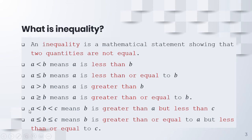For instance, in this continued inequality, we start by saying B, followed by 'is greater than A,' and then followed by 'less than C.'